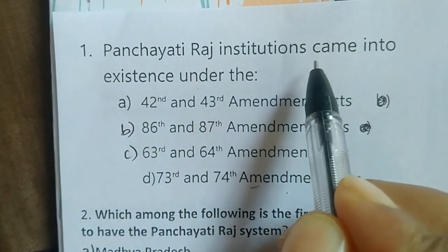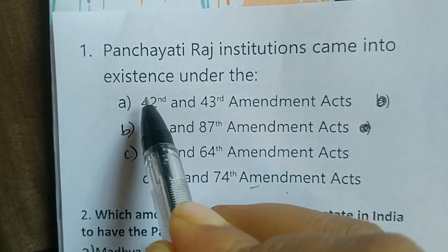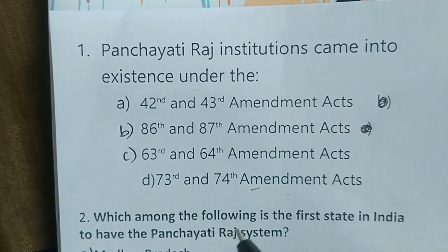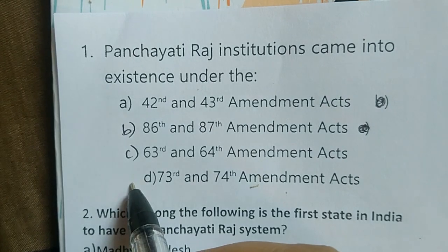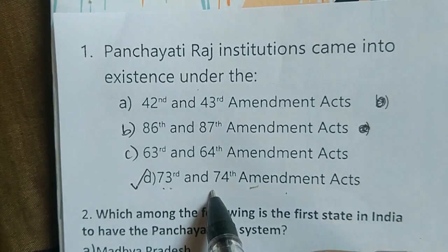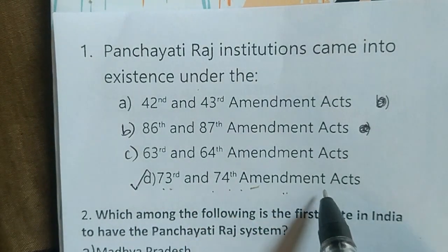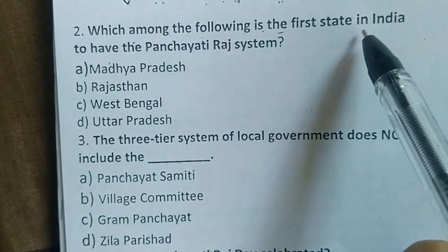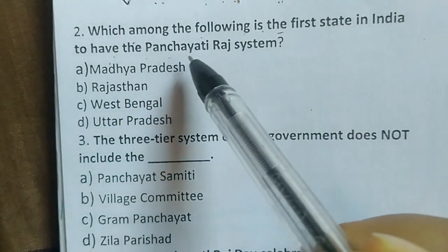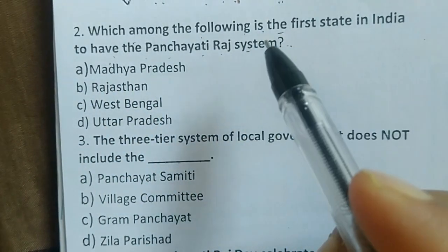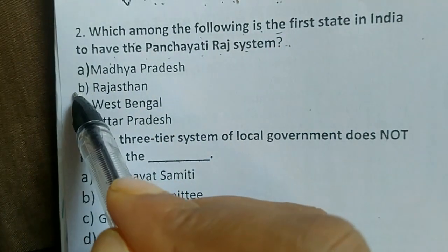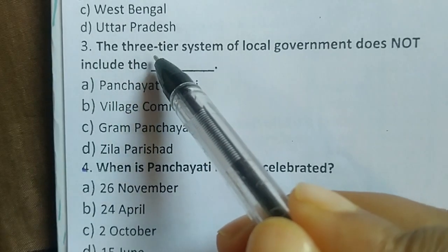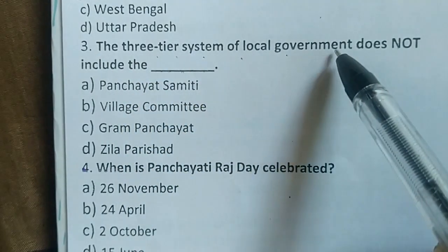Panchayati Raj institutions came into existence under the 73rd and 74th Amendment Acts — that is option D. Which among the following is the first state in India to have the Panchayati Raj system? The correct answer is Rajasthan.